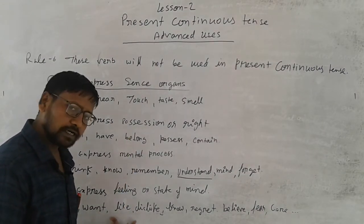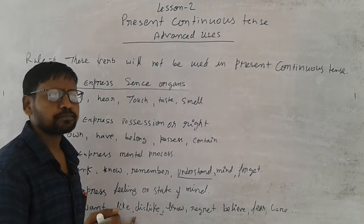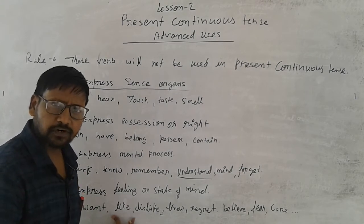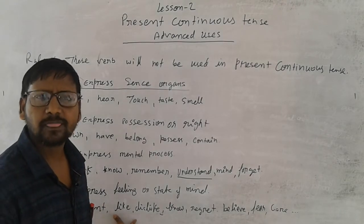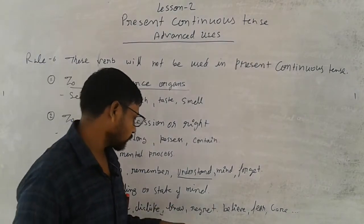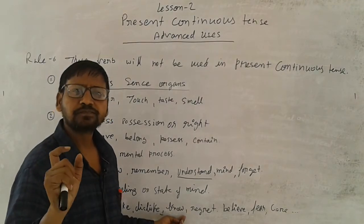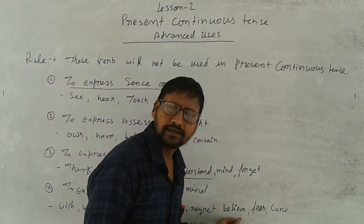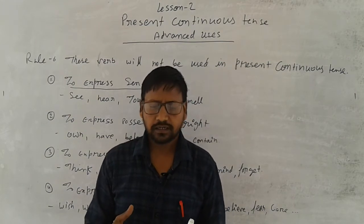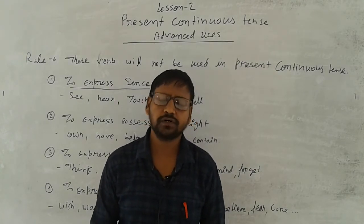The verb 'like' will not be added with the ING form. 'Like' will remain 'like.' For example: 'I like chocolate,' 'She likes chocolate,' 'I like coffee,' 'She likes tea.' These verbs tell us we are not to use them in present continuous tense. Have you ever heard 'I am knowing you'? No — the correct form is 'I know you.' I will teach you later how this verb can be used in the ING form in present continuous.